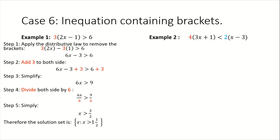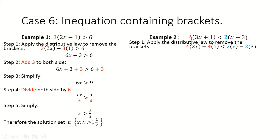Step 1 is to apply the distributive law to remove the brackets. We're going to take the 4 and distribute it to each term in the first bracket, and take the 2 and distribute it to each term in the second bracket — in other words, multiply each term inside of each bracket. As demonstrated here, we have 4 times 3x plus 4 times 1, minus 2 times 3.